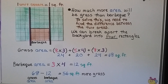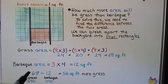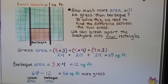Now that we have each area, we do 68 minus 12 equals 56 square feet more grass. Be careful — sometimes you have to read a word problem more than once to fully understand what it's asking. Make sure your answer is answering what the question asks.